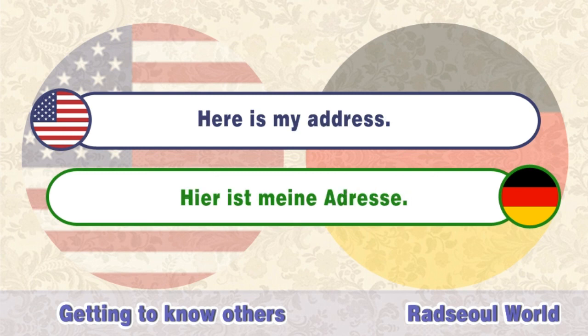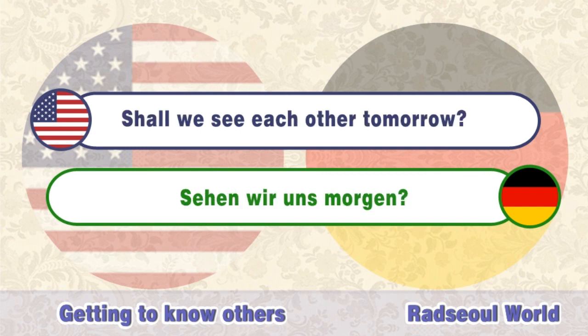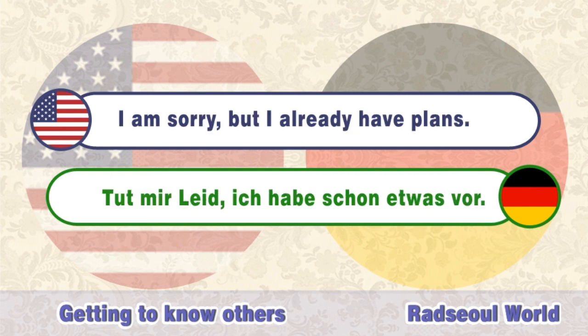Here is my address. Hier ist meine Adresse. Shall we see each other tomorrow? Sehen wir uns morgen? I am sorry, but I already have plans. Tut mir leid. Ich habe schon etwas vor.